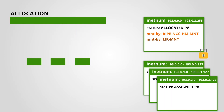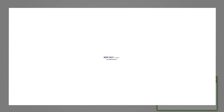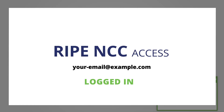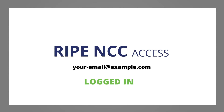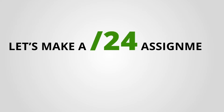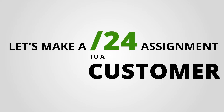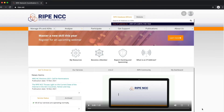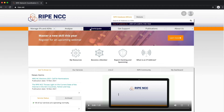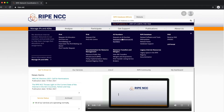To do this, you need to be logged in with your RIPE NCC Access Account. Let's make a slash24 assignment to a customer. Make sure you are logged in with your RIPE NCC Access Account. Go to ripe.net and select Web Updates.